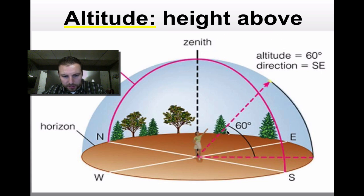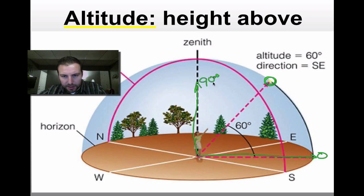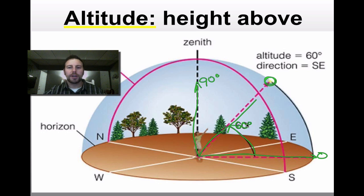If we look at the horizon right here as zero and straight above as 90, then this star is somewhere in between that angle. We're looking at about 60 degrees right here. So your altitude is your height above the horizon in degrees.